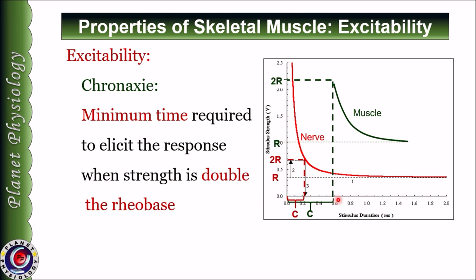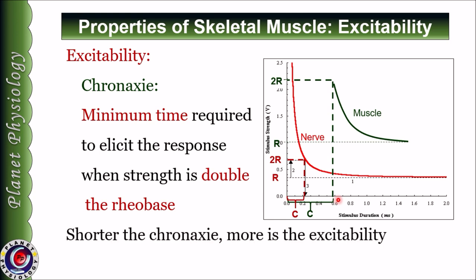Chronaxy is the standard for excitability, and there is an inverse relationship between chronaxy and excitability of the tissue. Lesser the chronaxy, more is the excitability. From this graph we can conclude that nerve has less chronaxy than muscle, and hence we say that nerve is more excitable than muscle.